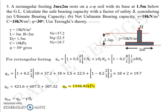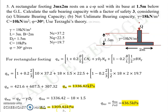Gamma and Df are already given, so 1336.42 minus 18 × 1.5 gives QNU as 1309.42 kPa. Using a factor of safety of 3, QNU divided by FOS equals QNS equals 436.5 kPa.